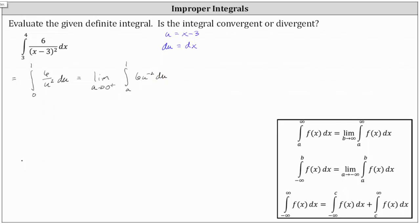If you look at what we did, we replaced u equals zero — where we had discontinuity — with the variable a, and then we have the limit as a approaches zero from the right. We're approaching zero from the right because if we approach from the right, we are approaching from within the interval of integration.